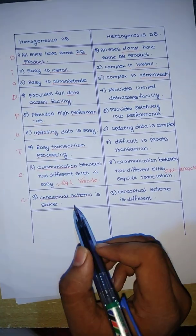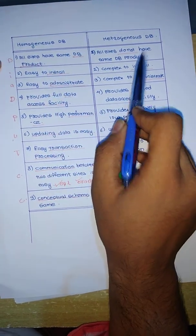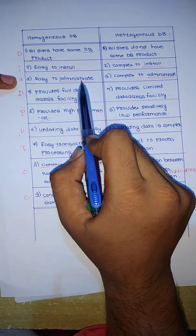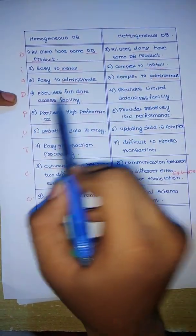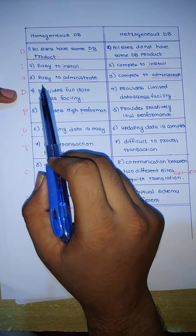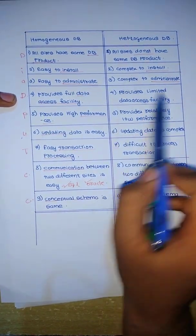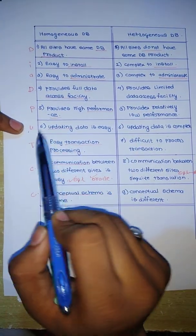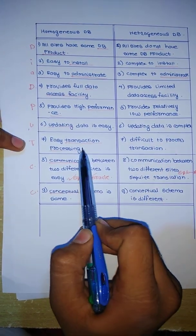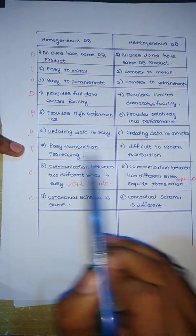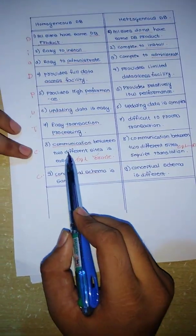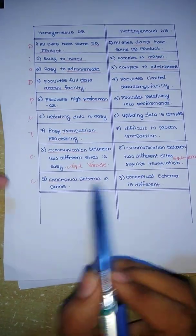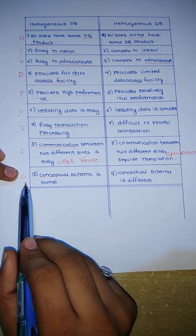Now let's recap all the keywords. D for database product — homogeneous has the same, heterogeneous does not. I for installation — easy vs complex. A for administration — easy vs complex. D for data access facility — full vs limited. P for performance — high vs low. U for updation — easy vs complex. T for transaction — easy vs difficult. C for communication — easy vs requires translation. C for conceptual schema — same vs different.